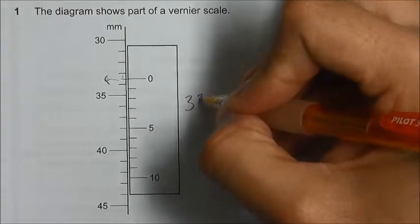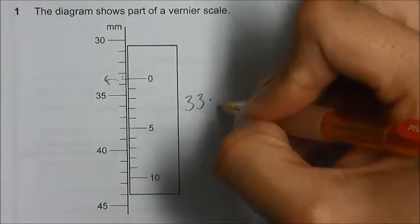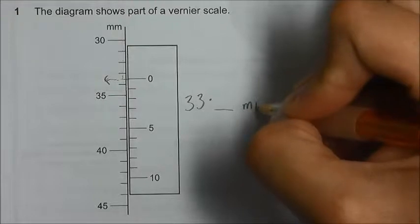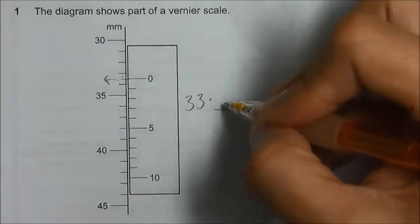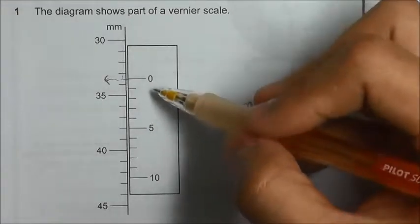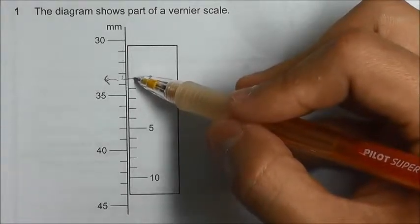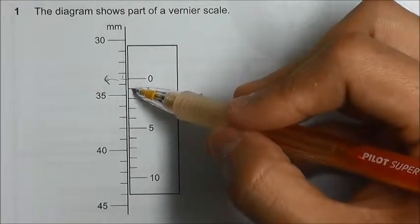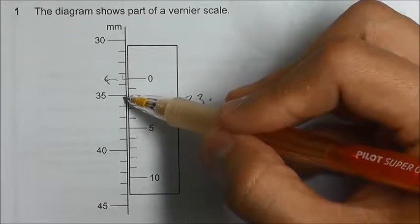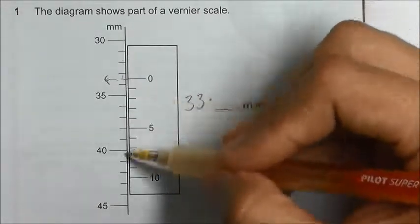33 point something mm. How do we fill in the last digit? We go to the vernier scale, then we see which line on the vernier scale forms a straight line with the line on the main scale.